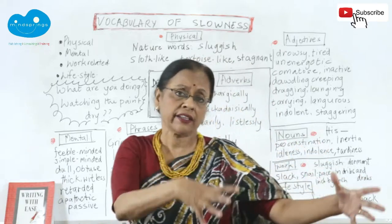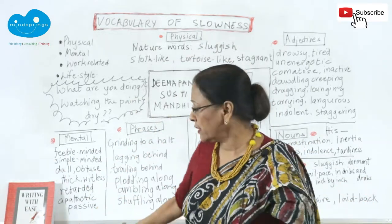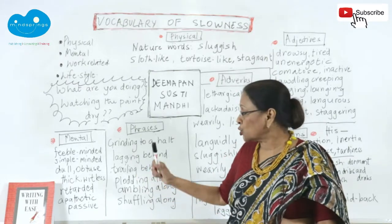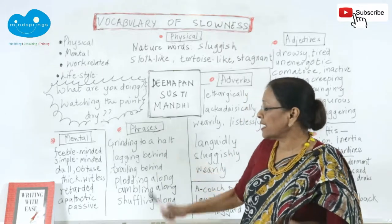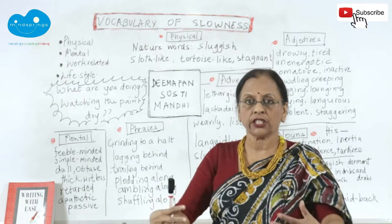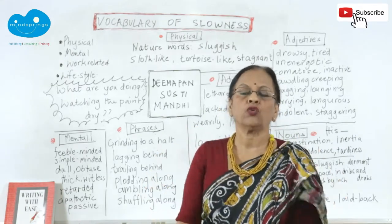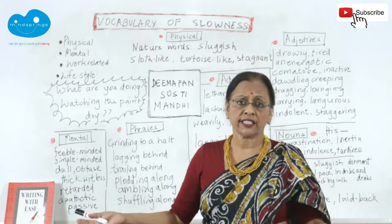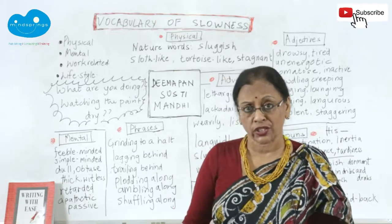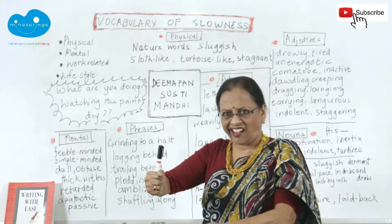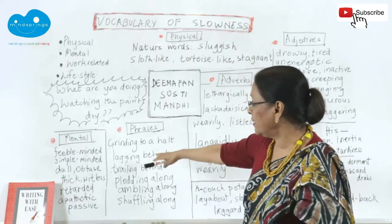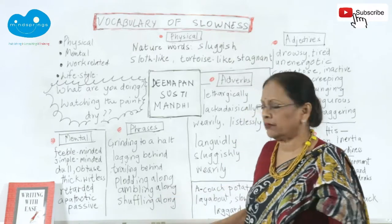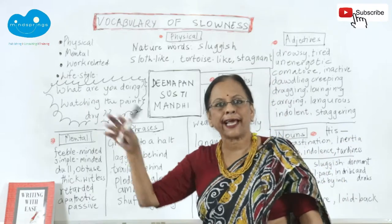Coming to phrases — जैसे बहुत सारे मुहावरे होते हैं slowness के लिए in English. 'Grinding to a halt' — that means something which is going quite well suddenly stops. For example: all his business ground to a halt because of GST, he didn't have an accountant, he started having losses — it ground to a halt. 'Lagging behind' — जो हम election time में सुनते हैं: 'this candidate is lagging behind that one.' These phrases express slowness vividly.